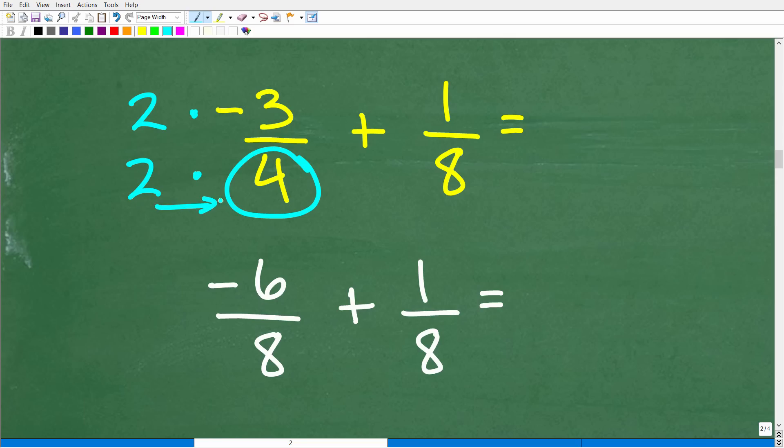But if we multiply the denominator by 2, we also have to multiply the numerator by 2. So 2 times negative 3 is negative 6. So we're going to end up with negative 6 over 8 plus 1 eighth.